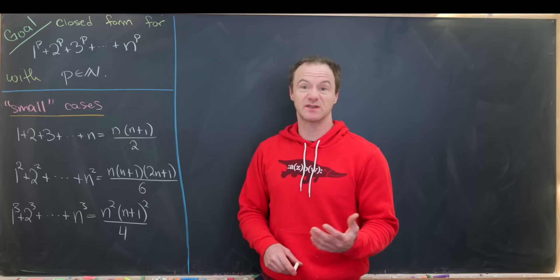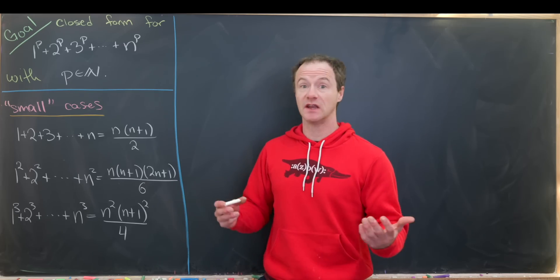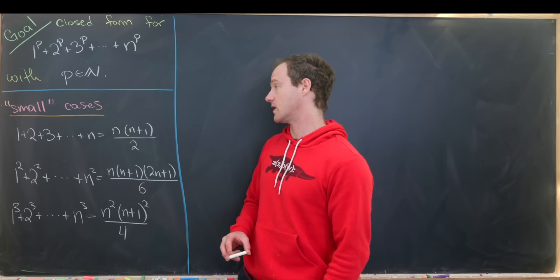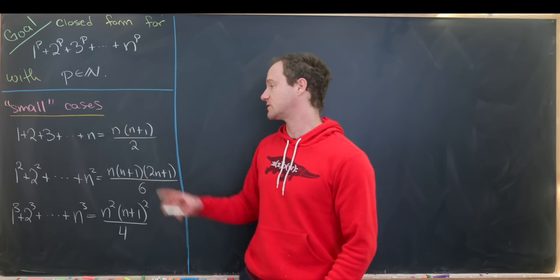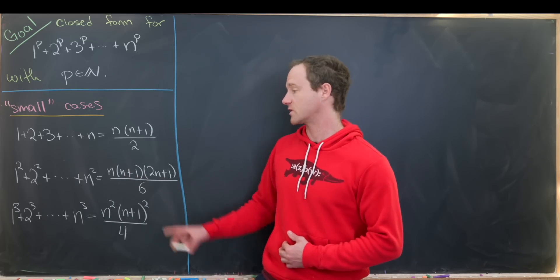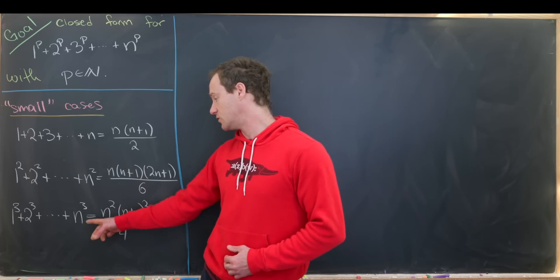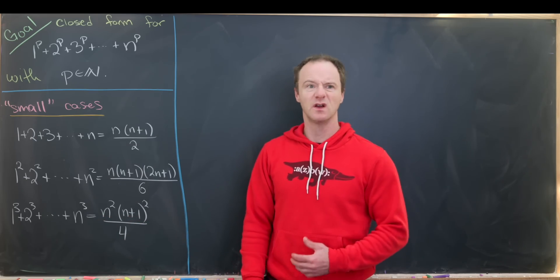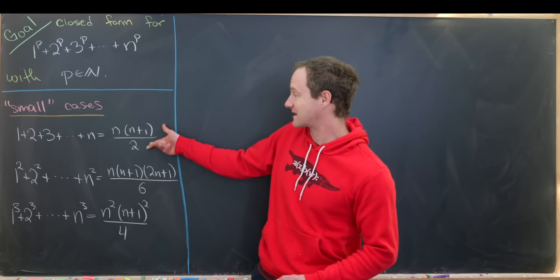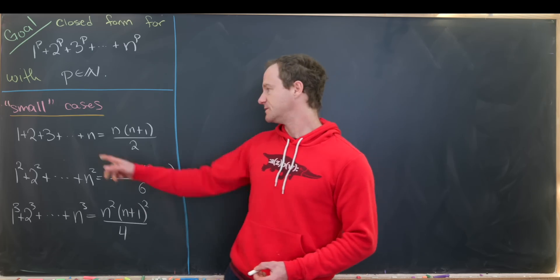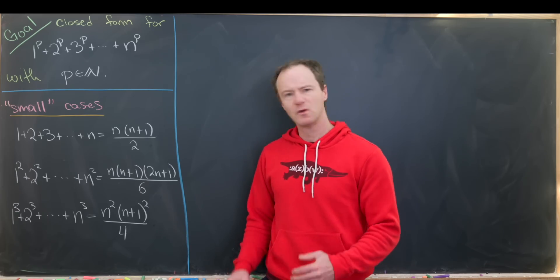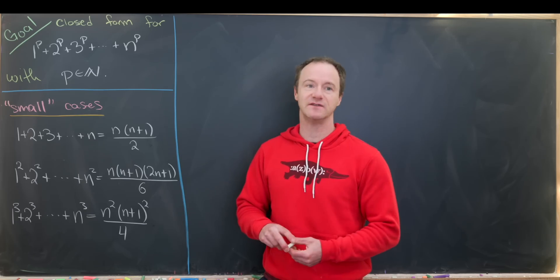Before we get started, let's look at some small cases which are easily proven with induction, though that's not how we'll prove this. The sum of the first n natural numbers is n(n+1)/2. The sum of the first n squares is n(n+1)(2n+1)/6. The sum of the first n cubes is n²(n+1)²/4, which is exactly the square of the sum of the first n natural numbers — a really beautiful formula.